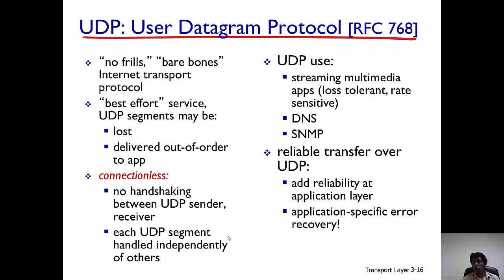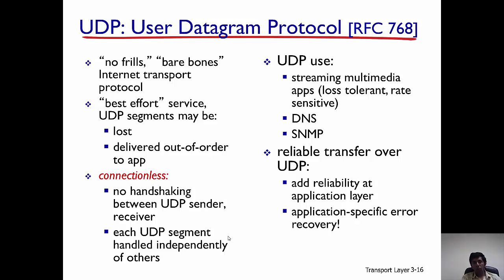How can you provide reliable data transfer using UDP? You could do that, but you would have to add reliability at the application layer if you want to use UDP and provide reliability. In general, if you want a reliable transport protocol, people just use TCP in place of UDP, and we will discuss TCP in a later video.